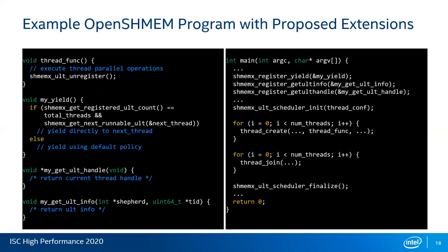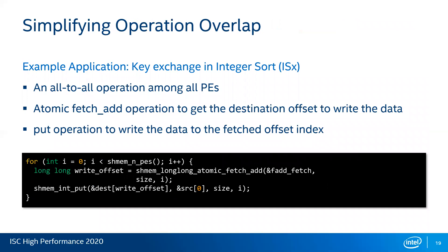On the left-hand side, we show all the registered functions. The notable one is the yield routine. You can see how the user can implement the yield routine — it employs both scheduling policies. If we see all threads have already started, then we choose the OpenSHMEM thread scheduler policy and get the next runnable thread from the proposed API. However, if all threads have not yet started, we choose the default policy from the thread library provided scheduler. The example we are choosing is an integer sort benchmark, which is a bucket sort algorithm where at the end it does a key exchange among all PEs.